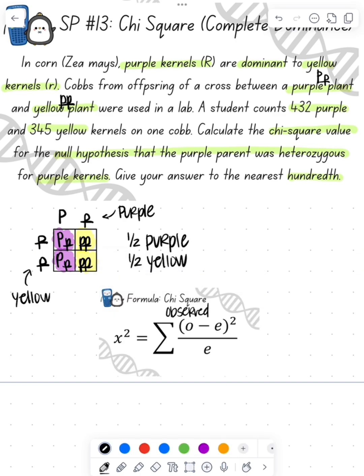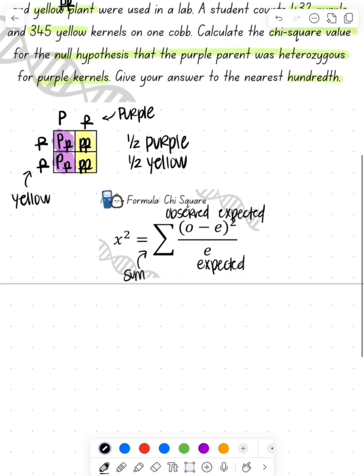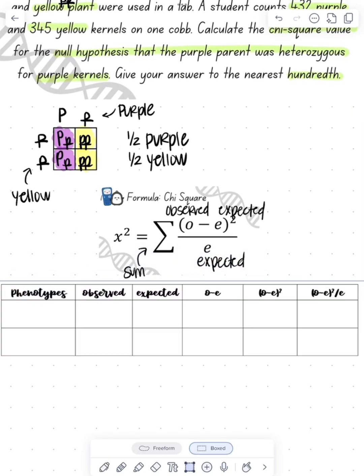The equation for chi-square is the observed minus the expected squared over our expected, and we're going to do the summation so we'll add each of those values together. I always use this little chart whenever I solve it, so in the chart we're going to fill in our phenotypes: purple and yellow.